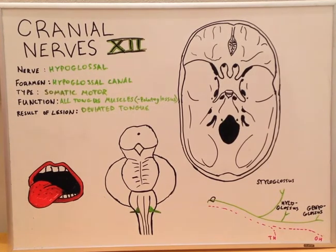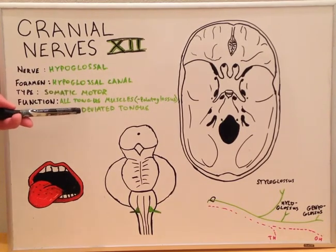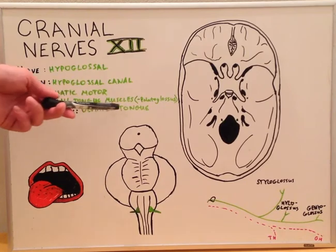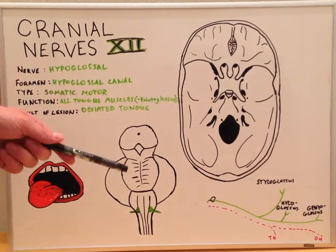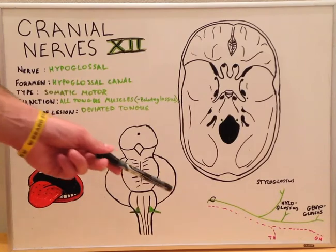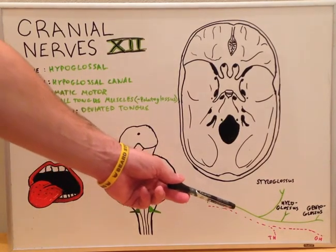A lesion of the hypoglossal nerve would result in a deviated tongue. Once the hypoglossal nerve exits through the hypoglossal canal, it branches to the particular muscles which it innervates.